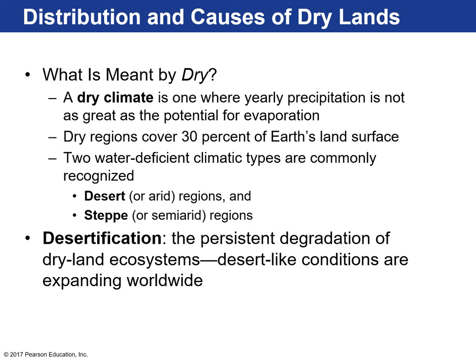So what does it mean to be dry? Why are certain areas on Earth super dry? A dry climate is where there is more evaporation than precipitation. Over 30 percent of the Earth is covered by dry regions, and there are two different climatic zones that refer to these water-deficient areas: deserts and steppes. Steppes are semi-arid regions. Desertification is the process where you have degradation of dryland ecosystems like steppes that convert into desert-like conditions, and this is a problem that is expanding worldwide.